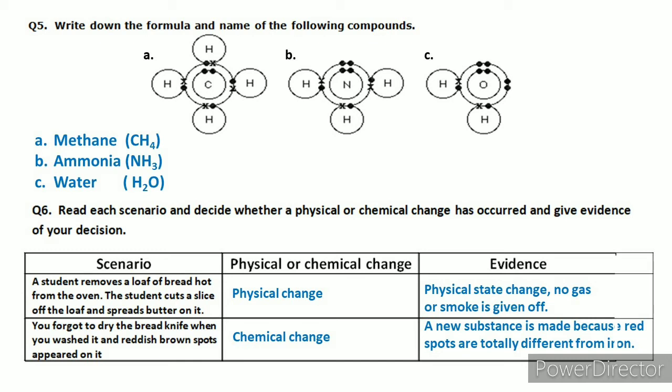Another example: when we make pizza dough, we add yeast or baking soda, and the dough rises. Because there is gas formation — carbon dioxide gas is formed — which causes the dough to rise. So this is a chemical change. The strong evidence is that gas is formed: carbon dioxide gas is made. Students, these differences between physical and chemical change may come on your exams, so you need to know how to identify and distinguish them.